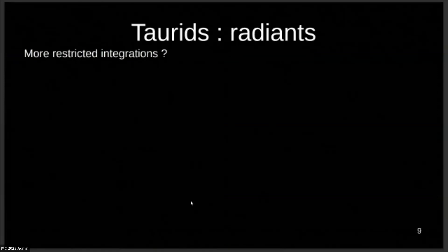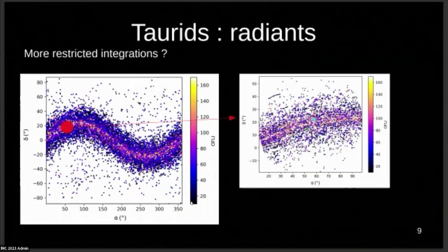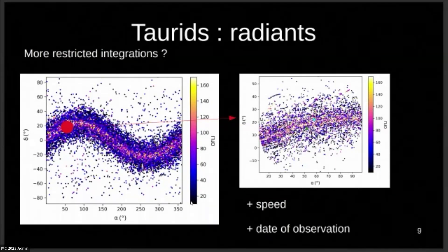My next question was, how do I do more restricted integrations? So I decided to try and take a look at the radiants. I took a look at all the particles I simulated before, and I selected those who encountered the Earth, and I computed their radiants. This is the kind of things I obtained. The red dot here is basically where the theoretical radiants of the northern and southern Taurids are. What I did was simply to choose particles that are close to these radiants. And amongst those, I also chose the particles who have a speed and date of observation that fits with the predicted ones for the Taurids, the northern and southern Taurids. With this, I had a smaller sample, and I could take a look at their initial conditions, and from them, restart the process of doing chaos maps.